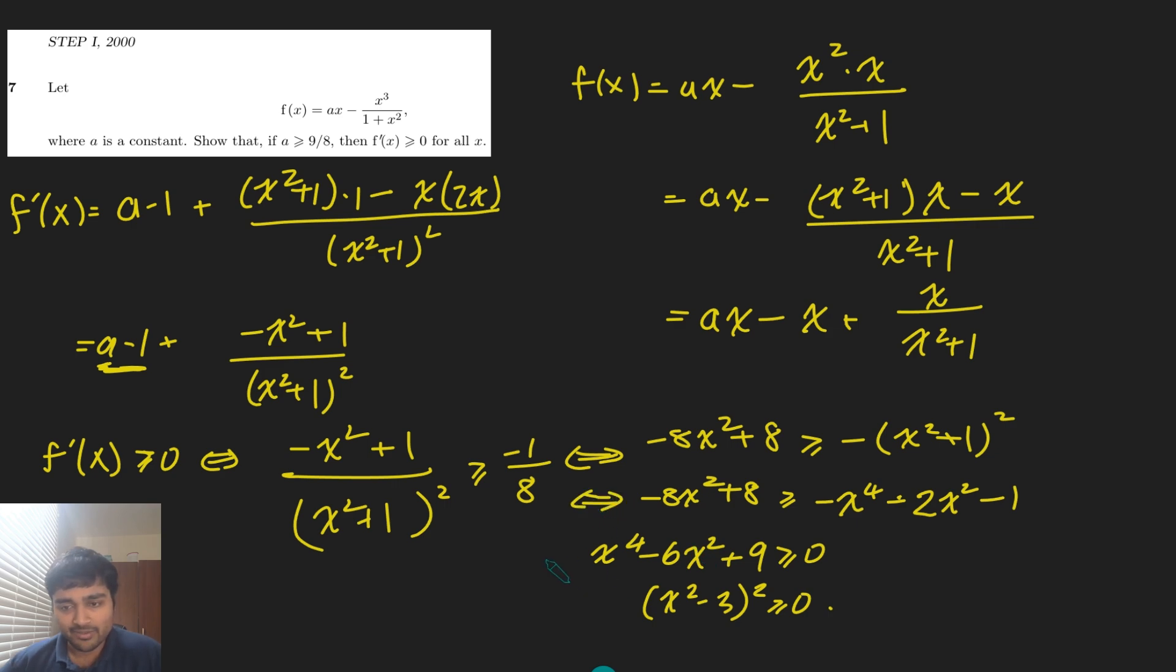So sorry, I've forgotten my if and only ifs here. But that is obviously true because the left hand side is something squared and so it has to be at least 0. And so therefore if we backtrack all of these inequalities, we get back down to this thing here being true. And so therefore f'(x) is always going to be at least 0, provided that a is at least 9 eighths.